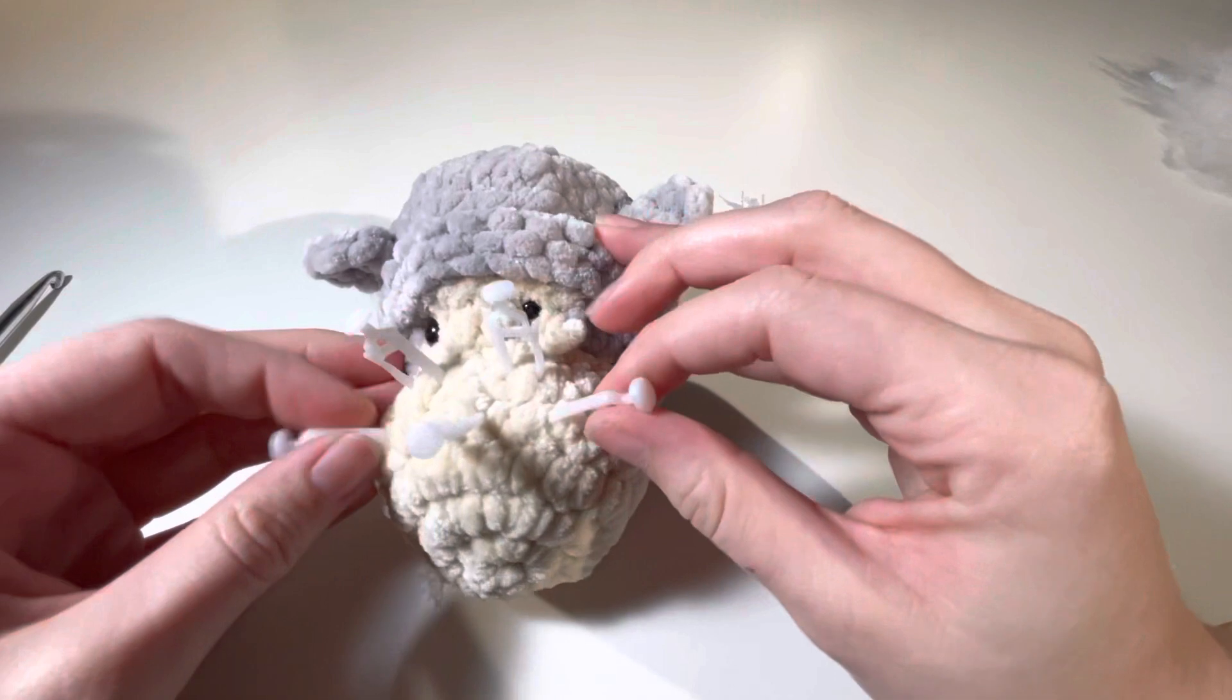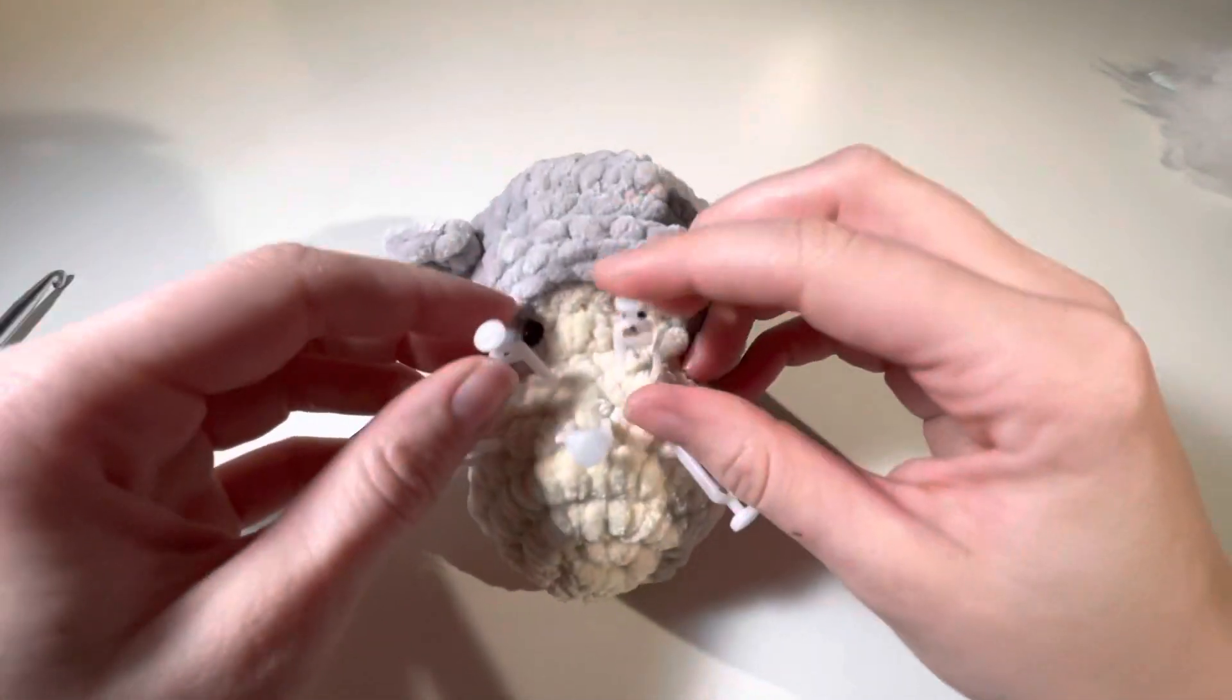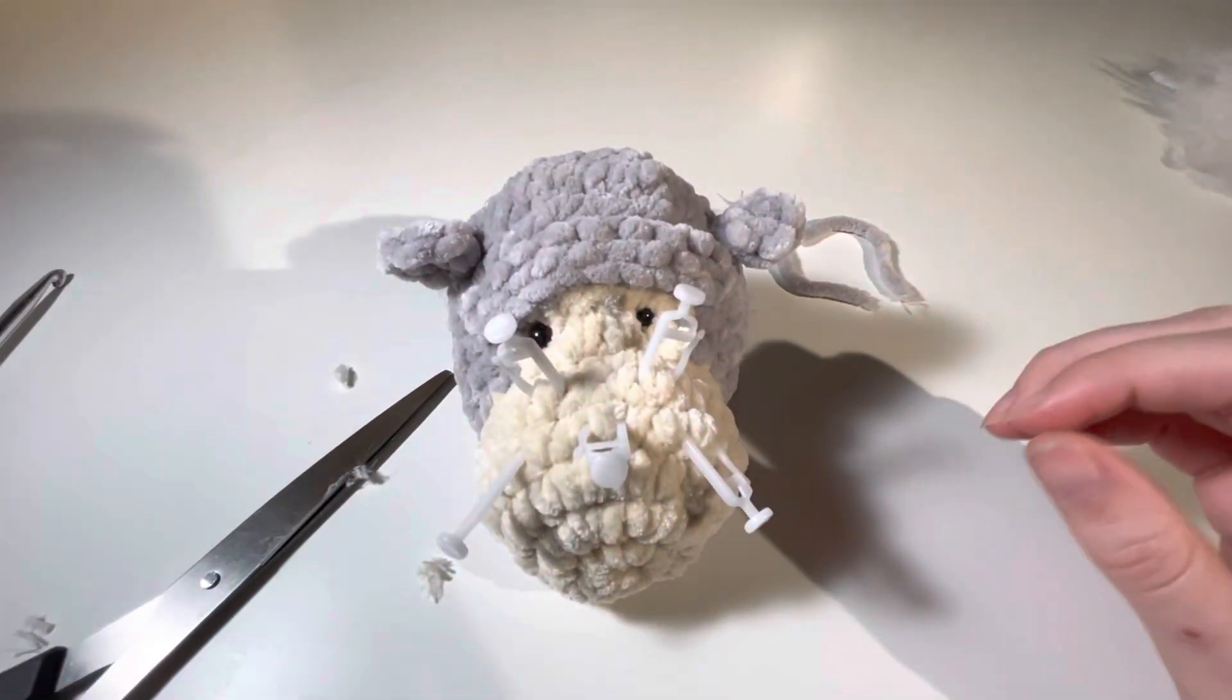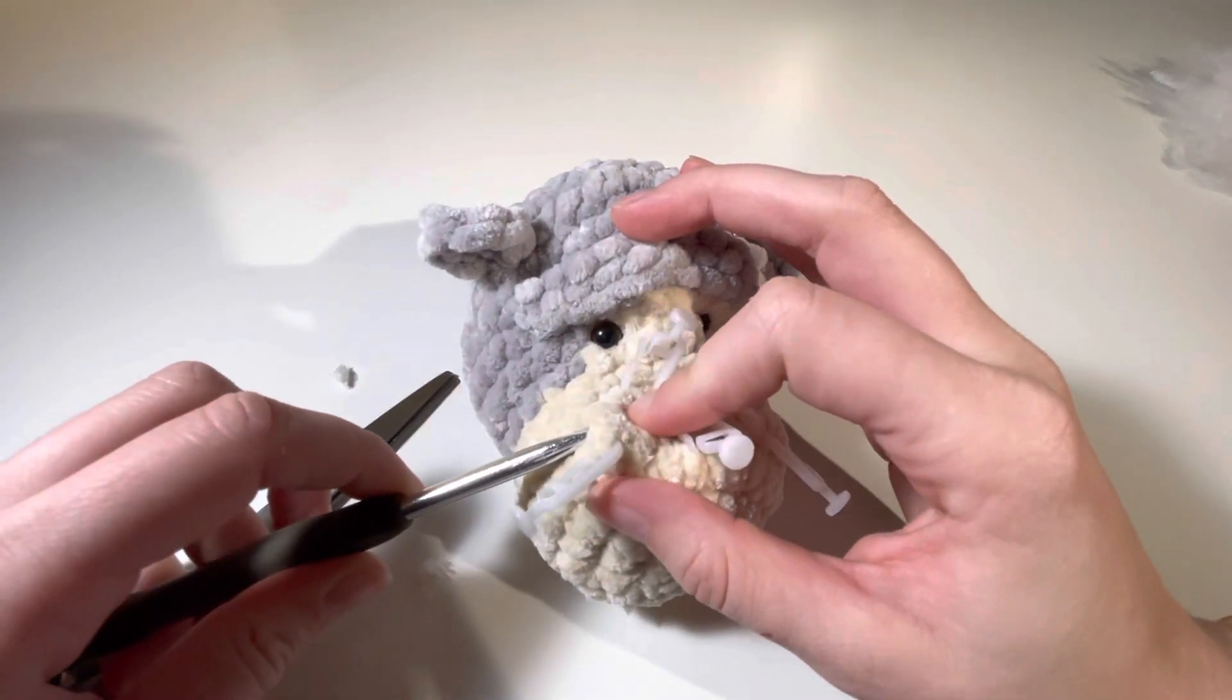And also do that on both sides. There we go. Double check your layout kind of makes sense. Here we are. And then again, get your 5.5 millimeter hook and you're going to go into the first one from the outside inwards, which should be your normal direction.